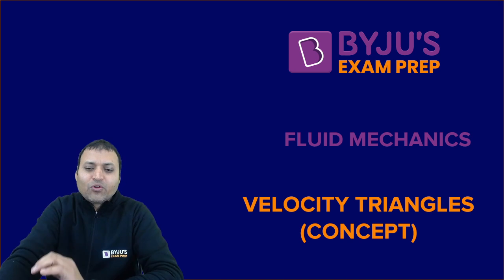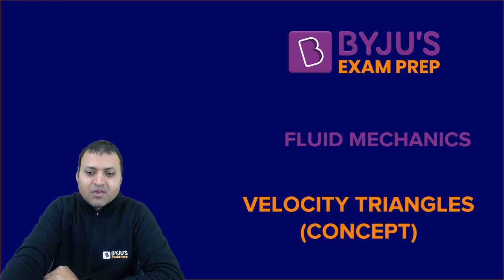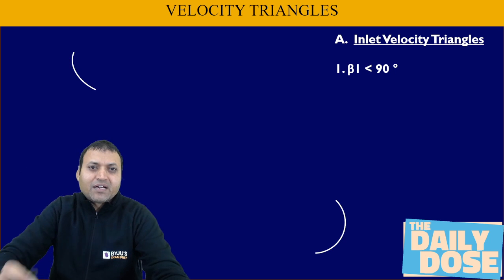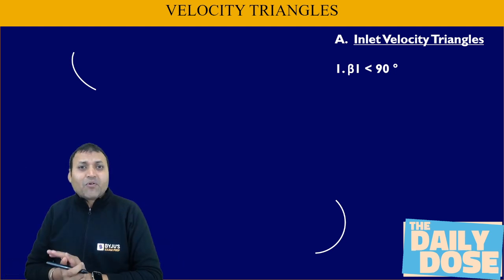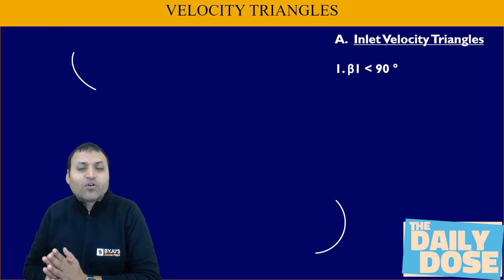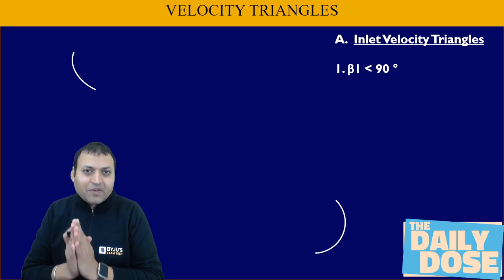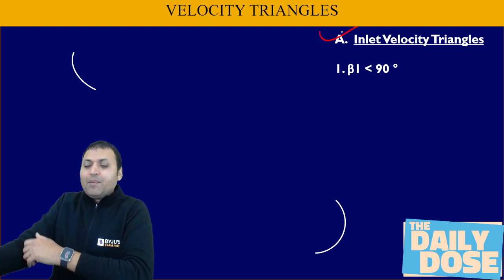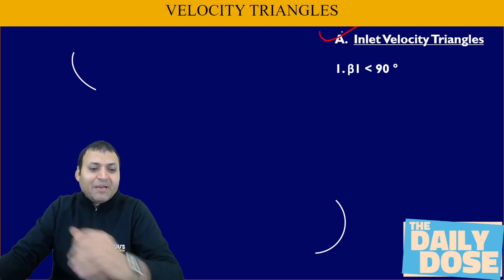How to draw the velocity triangle for the turbine. There are two types of velocity triangle — one is drawn at the inlet and another is drawn at the outlet. First of all, let us start with the inlet velocity triangle based on beta 1.